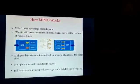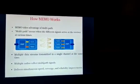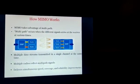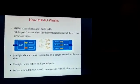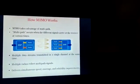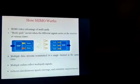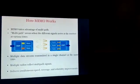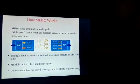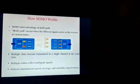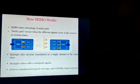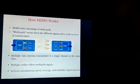How does MIMO work? MIMO takes advantage of multipath. Multipath occurs when different signals arrive at the receiver at various times. Multiple data streams are transmitted in a single channel at the same time. Multiple radios collect multipath signals. It delivers simultaneous speed, good coverage, and reliability improvement.